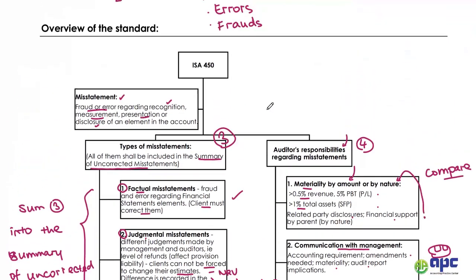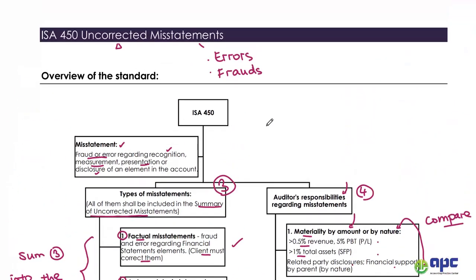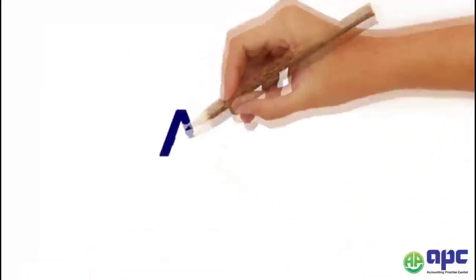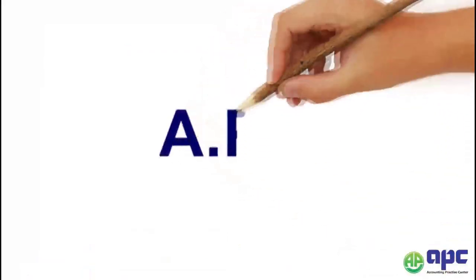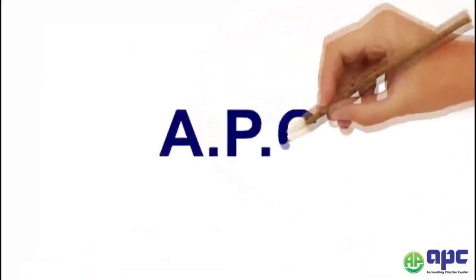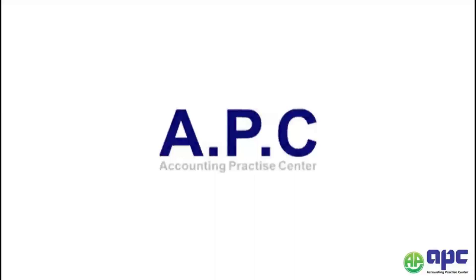To summarize ISA 450 on uncorrected misstatements: there are three types of misstatement and four auditor responsibilities — comparing with the benchmark, communicating with management, reassessing the overall materiality level, and considering further actions. I hope you found this helpful and look forward to seeing you in the next section.